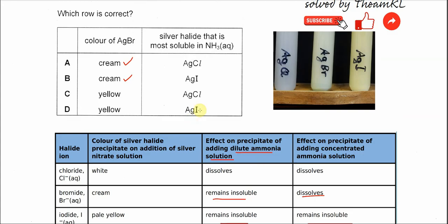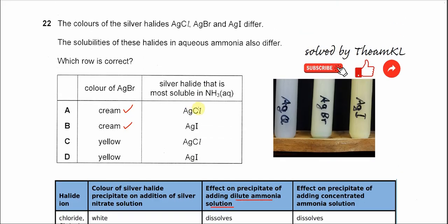The one with the highest solubility, or the most soluble silver halide, is silver chloride. So the answer is A.